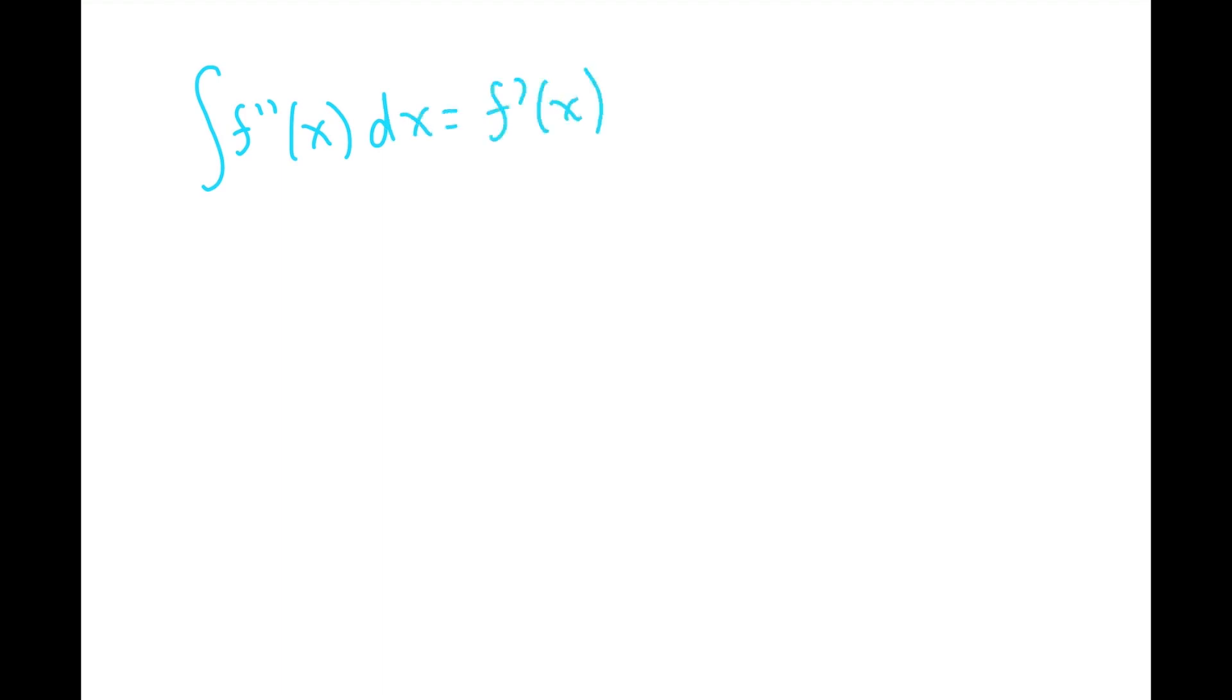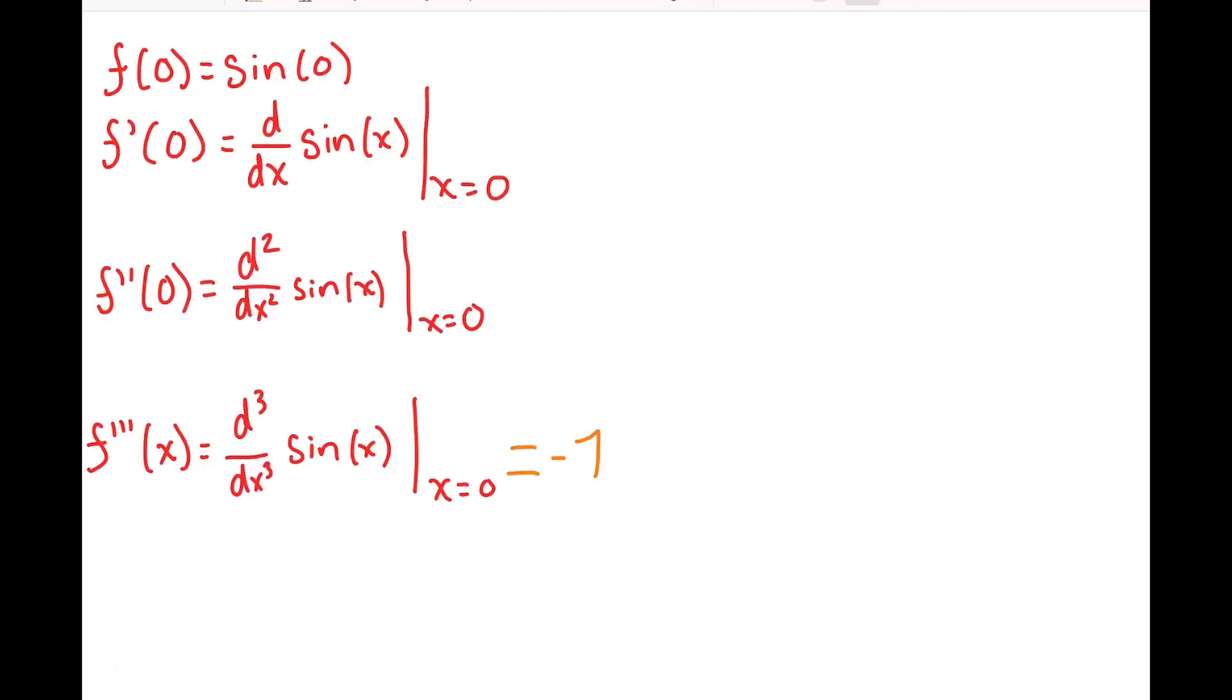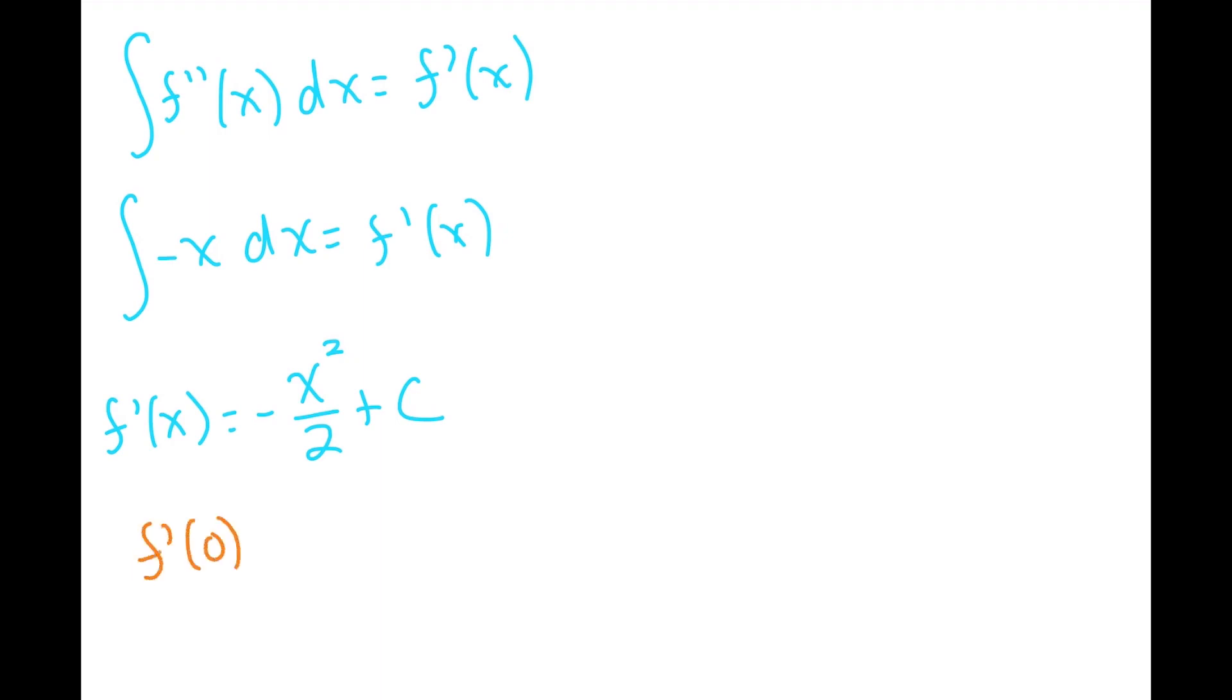Now let's integrate this function to get f prime of x. That gives us negative x squared over 2 plus c. Again, we can solve for c by setting f prime of 0 equal to the derivative of sine of x at 0. That's just 1. Plugging in 0 for x and 1 for f prime of 0, we can solve for c and get c equals 1. So our f prime of x equation is negative x squared over 2 plus 1.